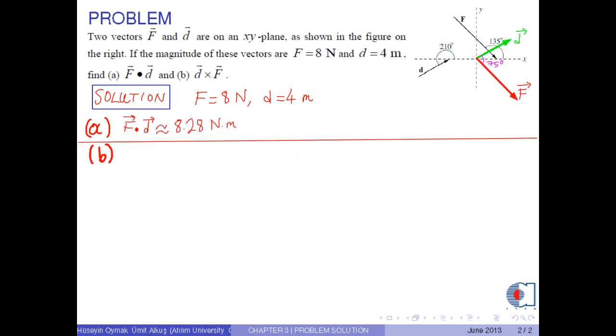In part b, we first note that, by the right hand rule, vector d cross f is on the negative k-hat direction.